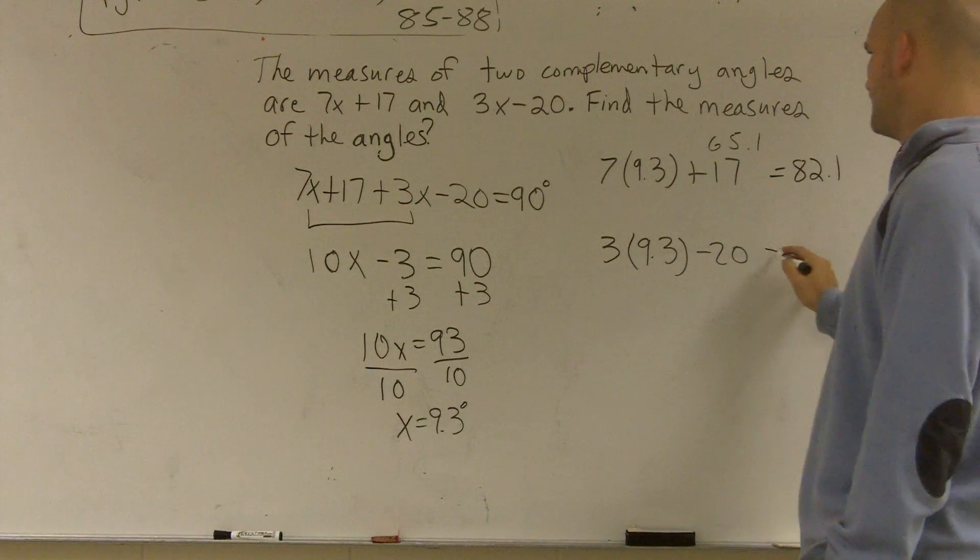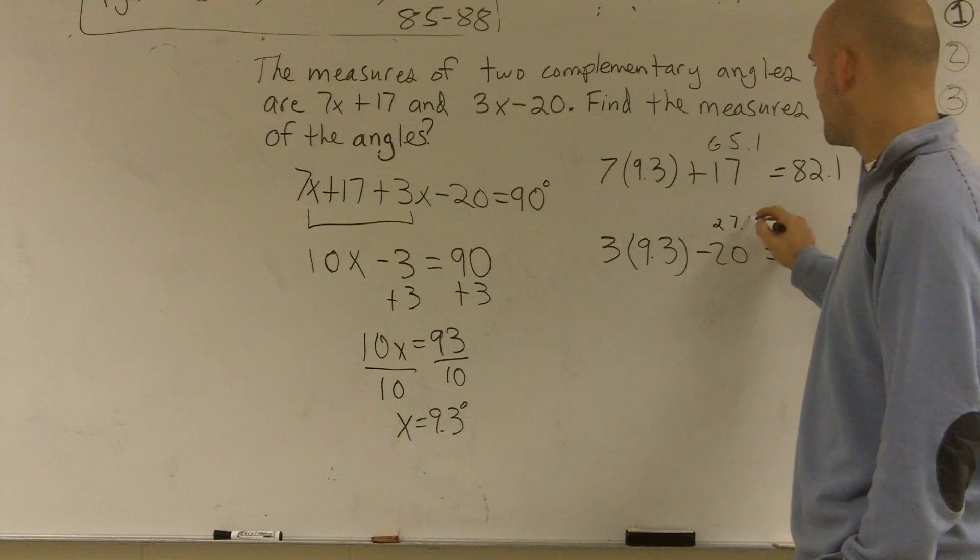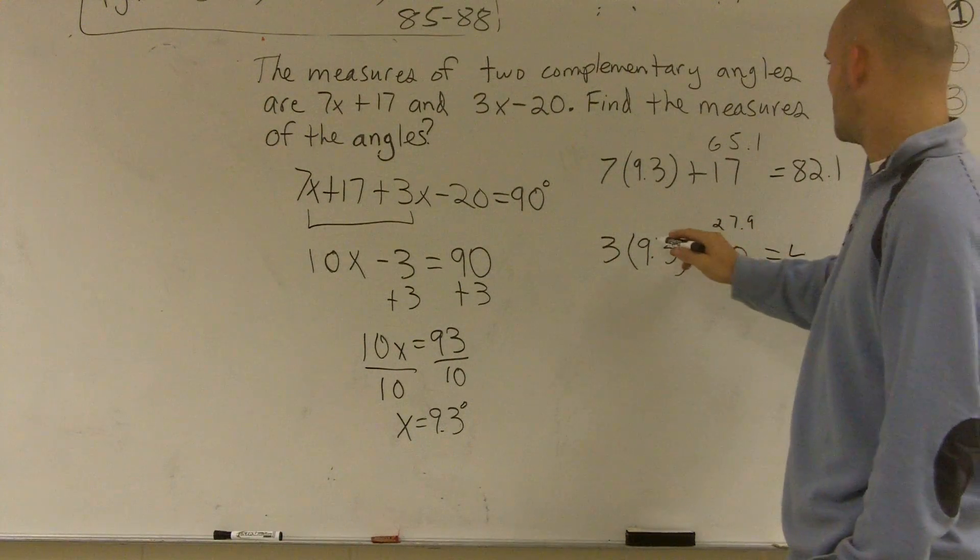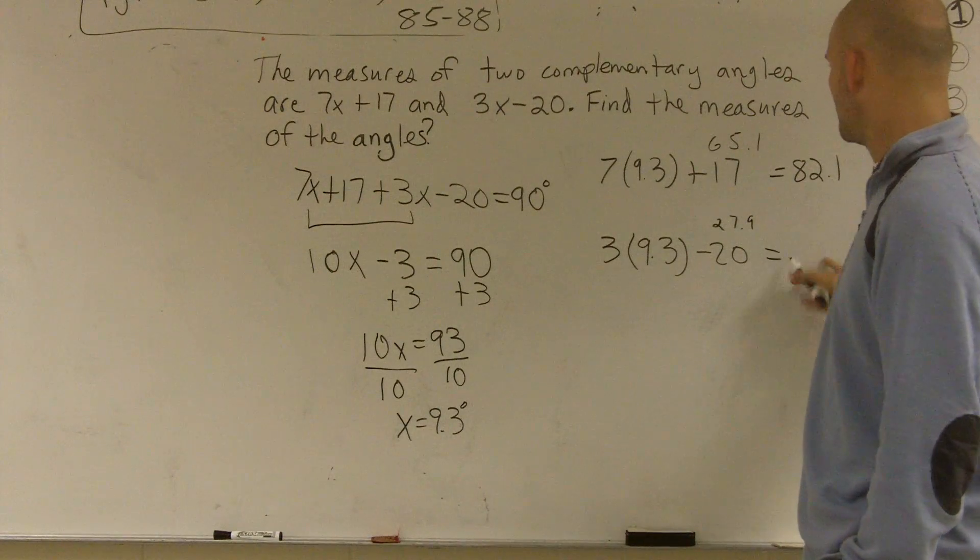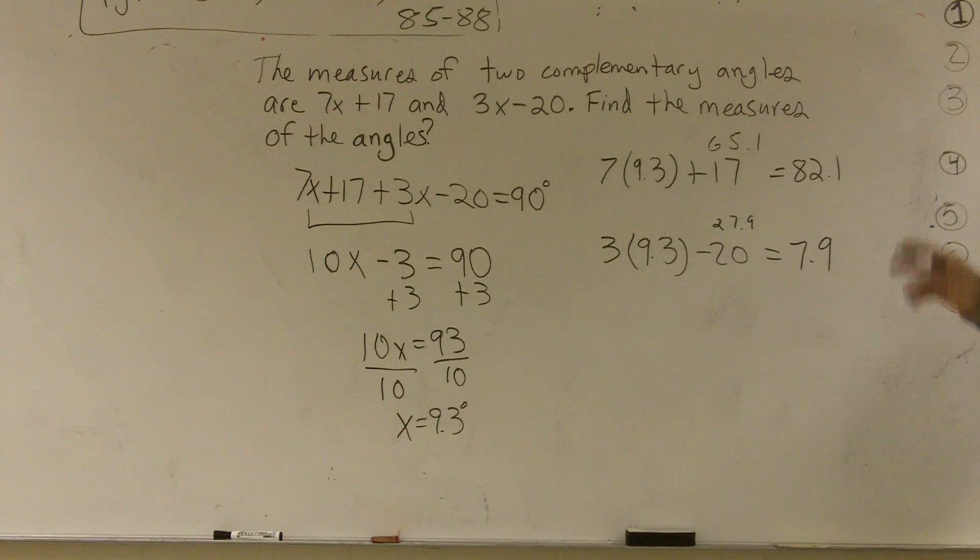And over here, we have 27.9. And so that would give me a minus. So that's just going to give me 7.9. So therefore, my two angles are going to be 82.1 and 7.9.